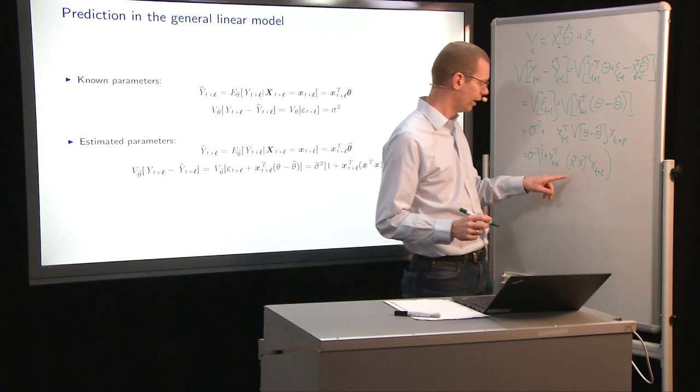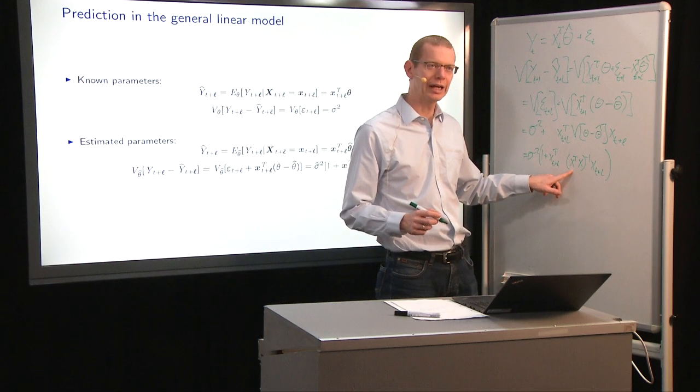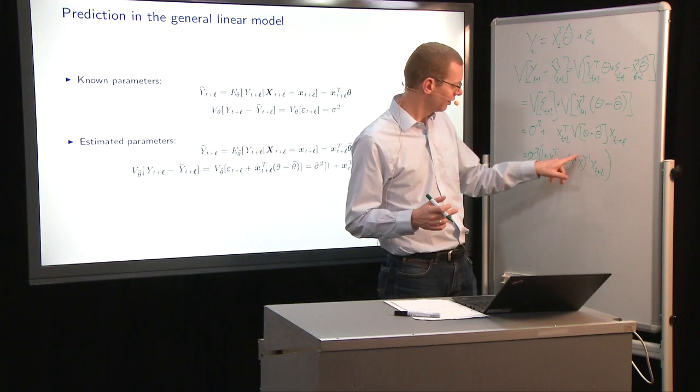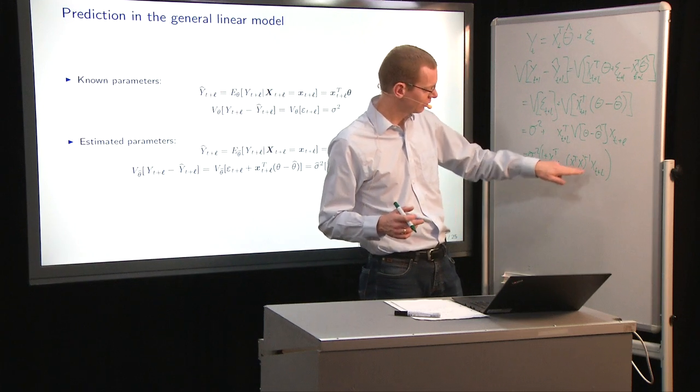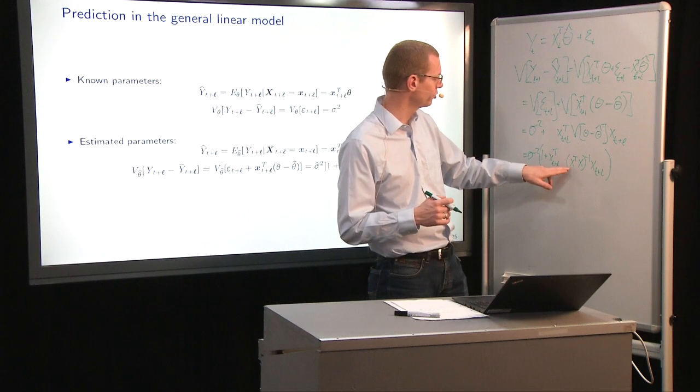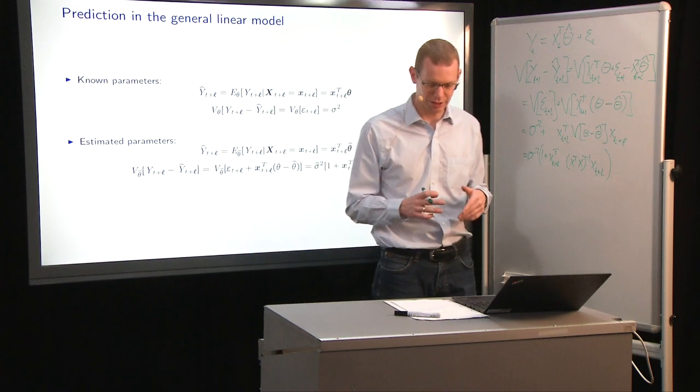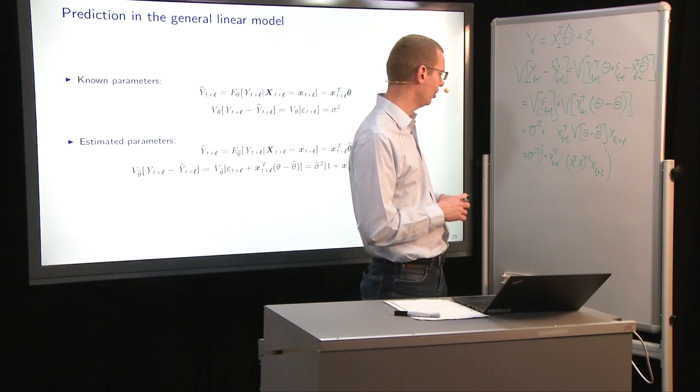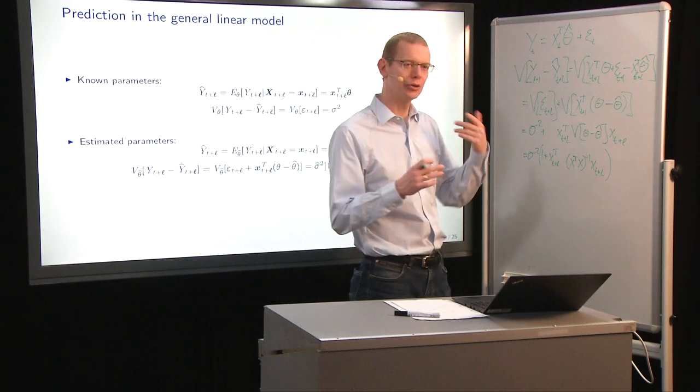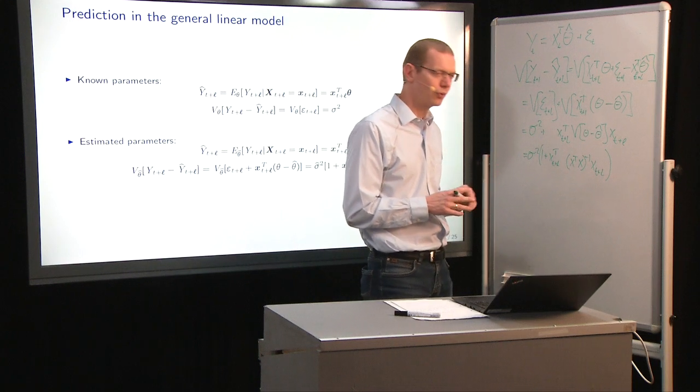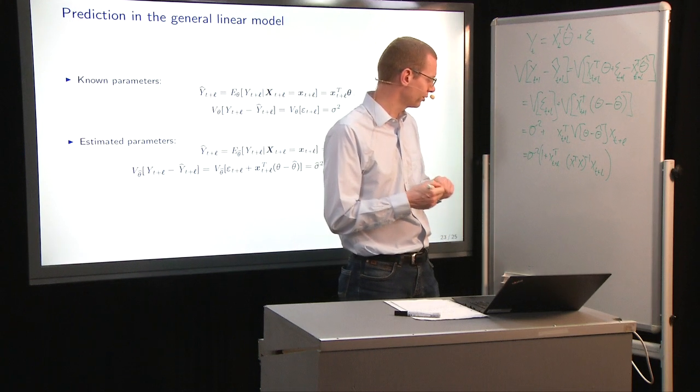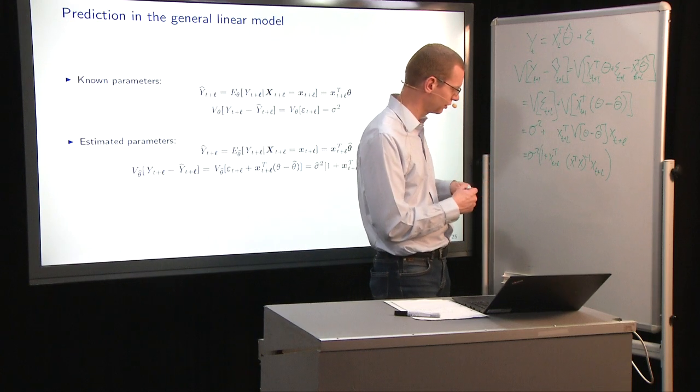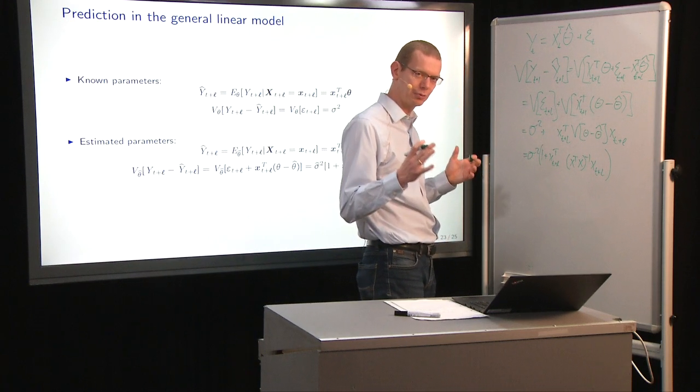And then we have an X transpose X inverse from the variance. And then we have X t plus L, like this. Now remember this X transpose X, those are all the observations up to time t that we have as rows in that matrix. So that's the design matrix that we used to estimate theta hat.